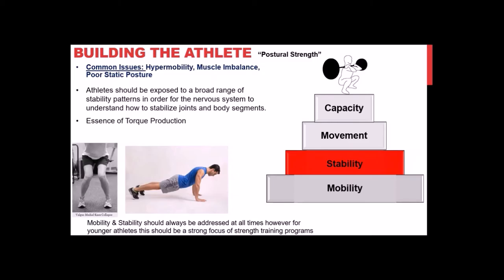Stability has to be addressed before developing more complex loaded movements. It's the essence of torque development — you have to stabilize the spine to produce lots of torque at the hip. Athletes should be exposed to a broad range of stability patterns so the nervous system learns how to stabilize joints and body segments. This aligns with what's discussed in the long-term athlete development literature.